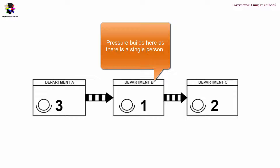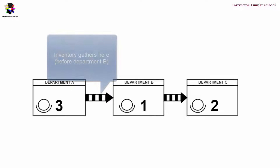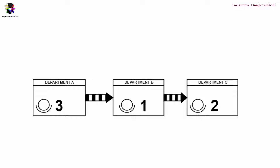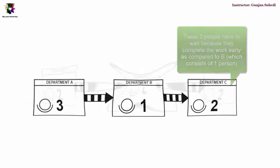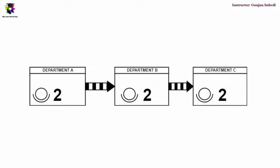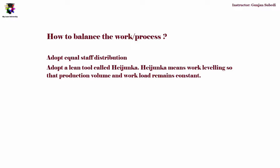Also, as the people of Department C finish their job first, inventories gather before process B, creating inventory waste. Since there are two people in process C compared to one in B, work is slow for process B, and people in process C have to wait, creating a waste of waiting. To make improvements for the future state map, we have to balance the process. We can adopt equal staff distribution or use a lean tool called Heijunka, which is work leveling so that production volume and workload remain constant.